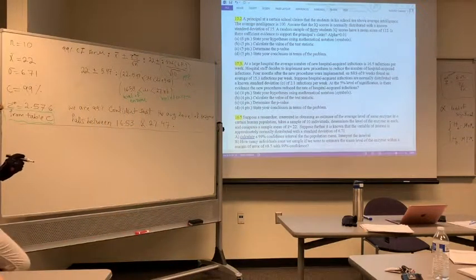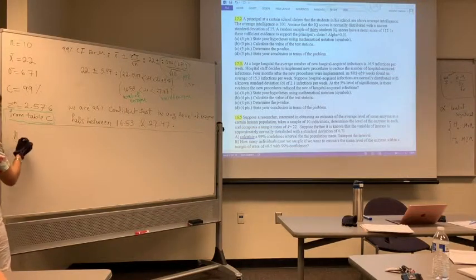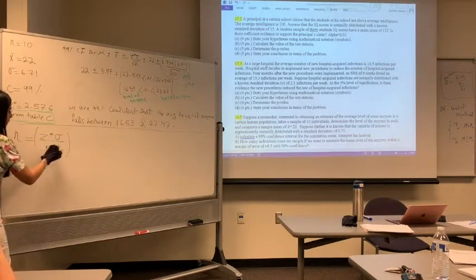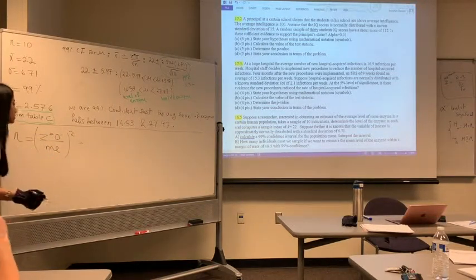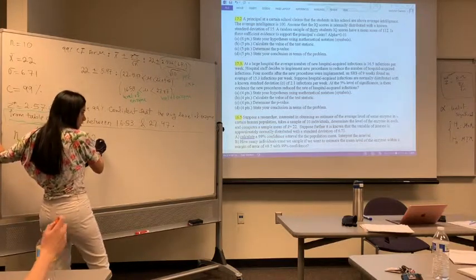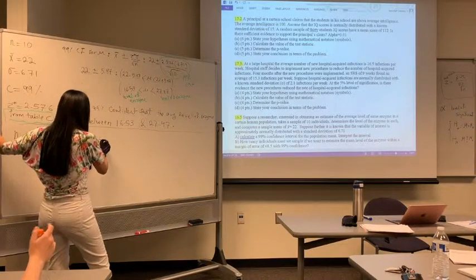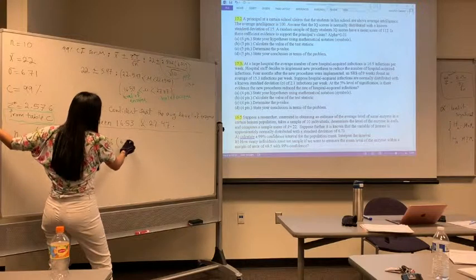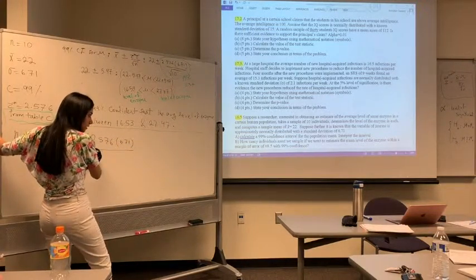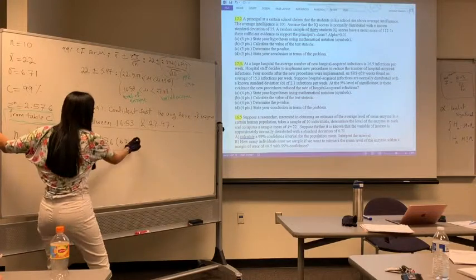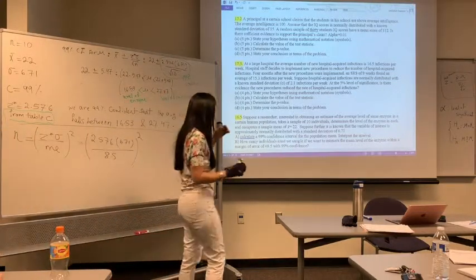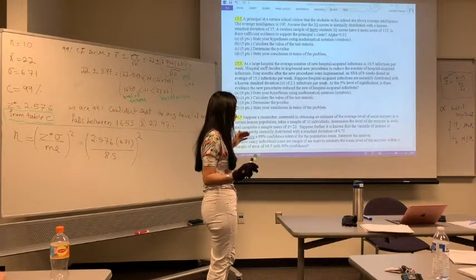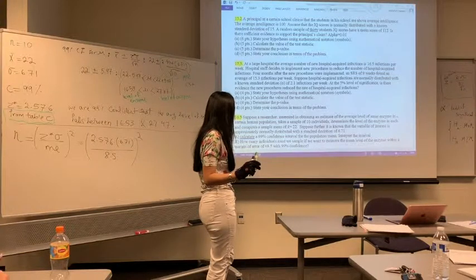Next part: how many individuals must be sampled? We use the sample size formula: n = (z-star times sigma / margin of error) squared. Z-star is still 2.576 since we are using 99% confidence. Sigma is still 6.7. The new margin of error is 8.5.